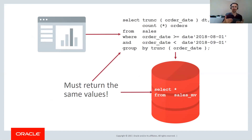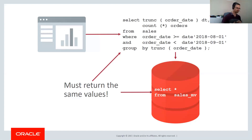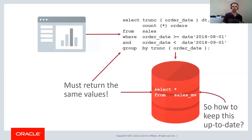So if someone adds an extra order for last month — some kind of reconciliation process or cancels a bunch of orders — that materialized view will be invalidated and the query rewrite will no longer happen. So the important question is: how do we keep the materialized view up-to-date? How do we make sure it stays in sync with the data in the real tables?